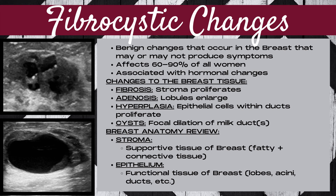A common benign condition that can occur in the breast is known as fibrocystic changes. These are benign changes that may or may not produce symptoms, estimated to affect 60 to 90% of all women sometime during their lifetime, and are associated with hormonal changes to the breast tissue. There are four changes occurring to the breast tissue: number one is fibrosis, where the stroma proliferates; number two is adenosis, where the lobules of the breast enlarge; number three is hyperplasia, where epithelial cells within the ducts proliferate; and number four is cysts, with focal dilatation of the milk ducts.